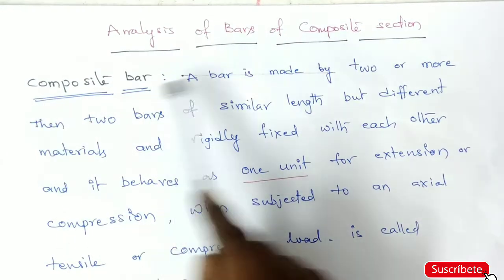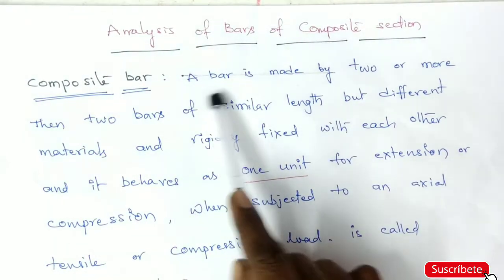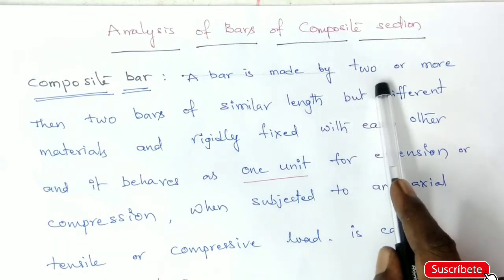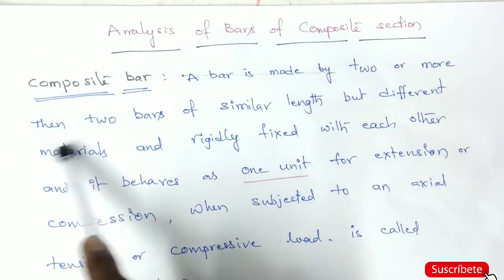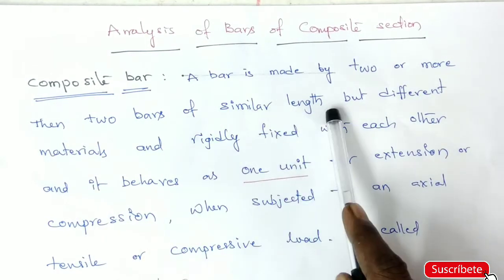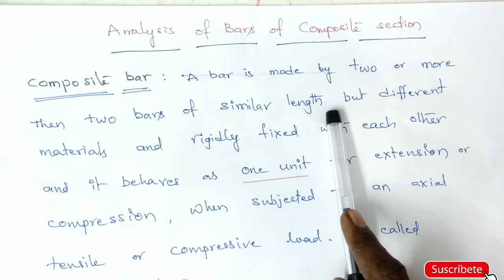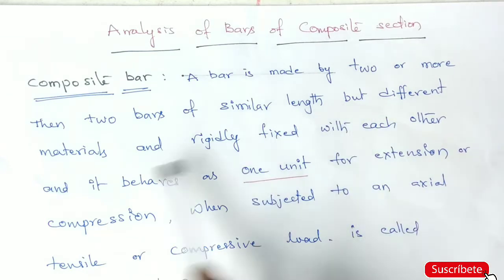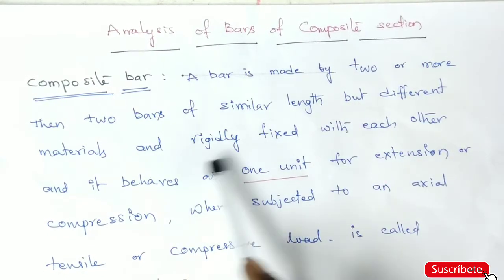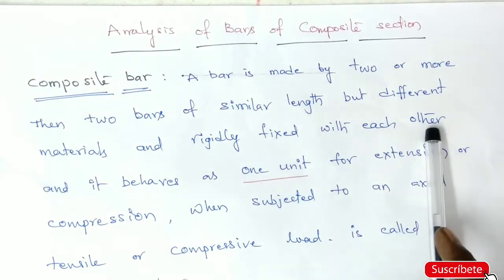So composite bar - a bar is made up of two or more than two bars of similar length. Two bars of the same length but different materials, different properties of materials, and rigidly fixed with each other, and it behaves as one unit.